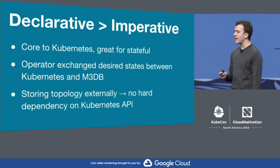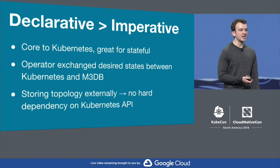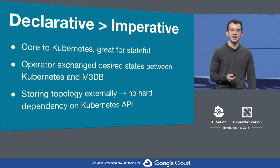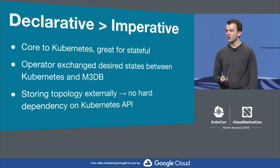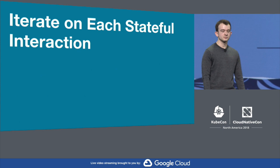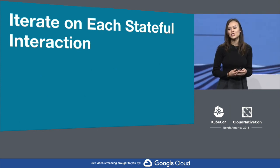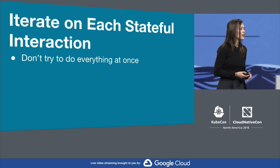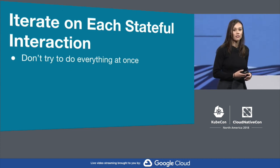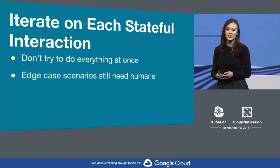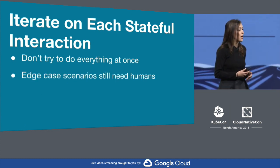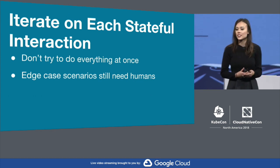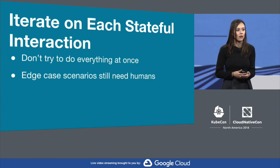Additionally, by storing our topology external to Kubernetes, we avoided a hard dependency on the Kubernetes API in order to operate our clusters. This meant that in disaster scenarios, even if the Kubernetes API was fully down, we could still make cluster topology changes so long as the instances themselves were up. In terms of project planning, it's important to iterate on each step of the stateful interaction. Don't try to mentally solve everything at once and be mindful about what you want Kubernetes to handle. We were more focused on reactive stuff to start with, and ultimately those efforts led us to solve proactive hurdles as well. It's okay for some things to still be left to humans — in our use case, we would definitely still need human intervention in some edge case scenarios, such as recovery if we somehow lost an entire region.